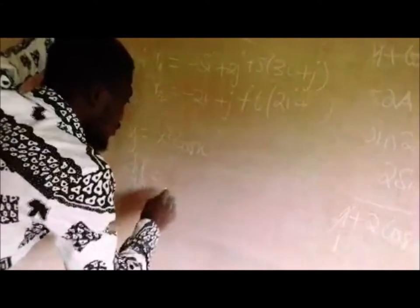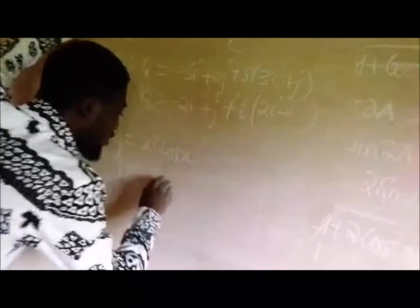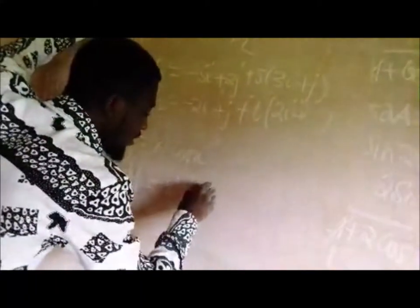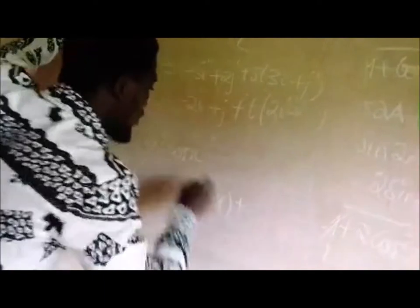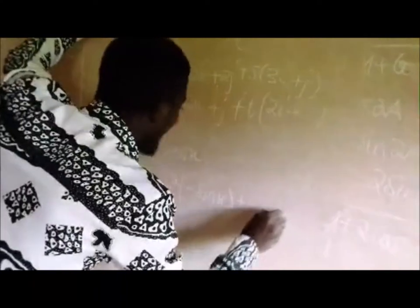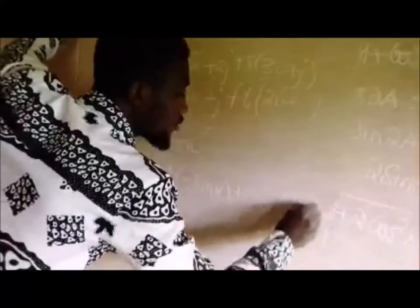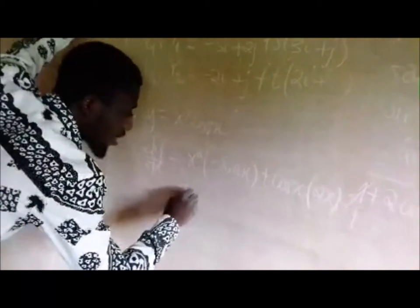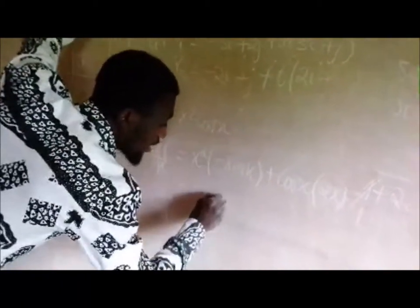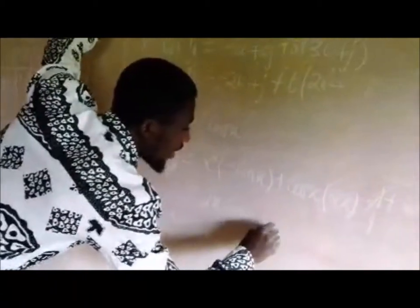So out here we are going to keep x squared and differentiate negative cos x. I want to have negative sine x. Then I will keep constant cos x, and I will differentiate this. I am going to have 2x. So therefore, I am going to have 2x cos x minus x squared sine x.